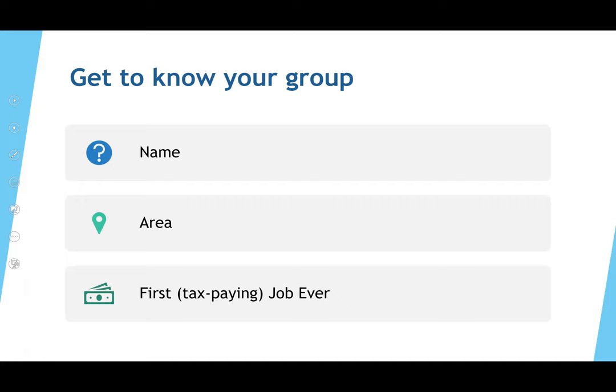Getting to know your group is really important. When I'm having a session, I ask participants their name, their area — what part of the country or what institution — and their first tax-paying job ever, where they actually got a paycheck. I picked up a trick from a co-facilitator: challenge people to complete this in one breath — say your name, area, and first job without taking an additional breath in between. Anyone want to try?